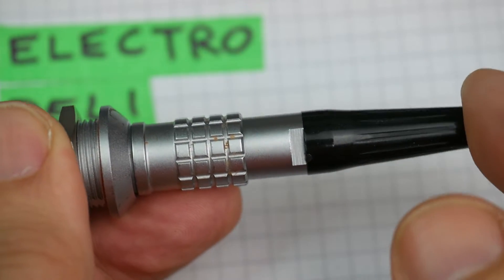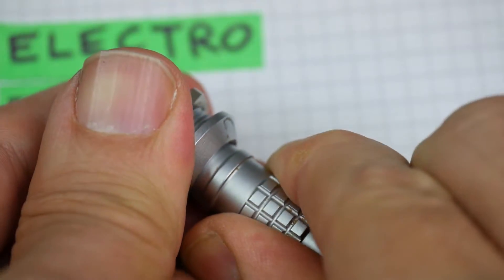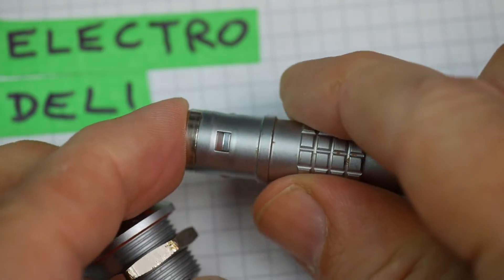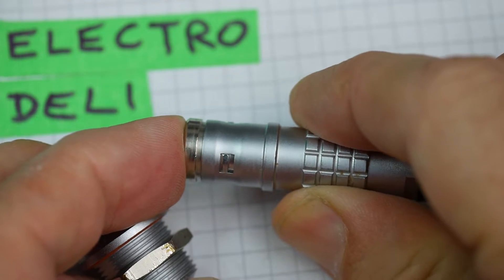The plug doesn't just fall out. You have to pull back on the sleeve and then pull and out it comes. So if you look at those barbs, they retract when you pull back on the sleeve.